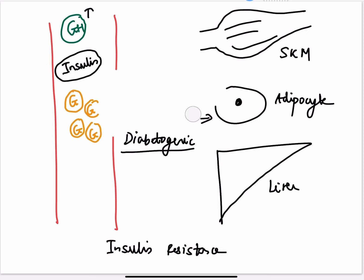So when glucose is no more going into the adipocytes and the skeletal muscles, where do you think it is going to stay? Obviously the levels of glucose in the blood increase.